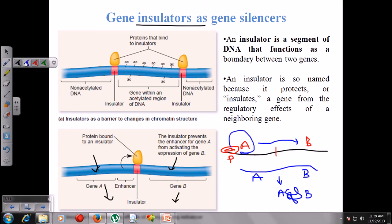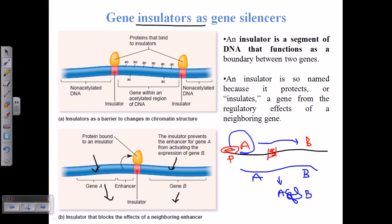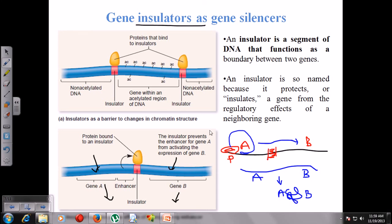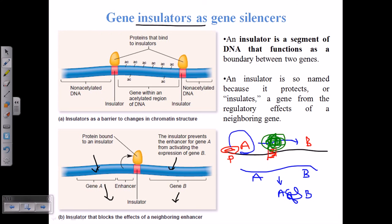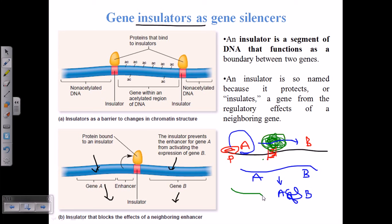But imagine if there is an insulator region present in the middle. If this insulator region is blocked by a protein — an insulator binding protein — that binds to the insulator region, then what will happen is that even if the polymerase sits on the promoter, it will only synthesize the mRNA of gene A but cannot synthesize the mRNA of gene B, because there is a gap created by the insulator. So the insulator blocks the linkage of both genes together. As a result, gene A will be transcribed on its own and gene B will be transcribed on its own — independent transcription — and that is achieved using these insulators.